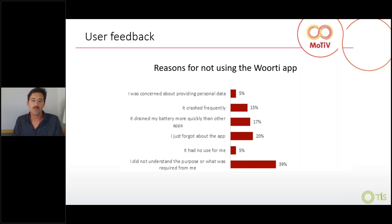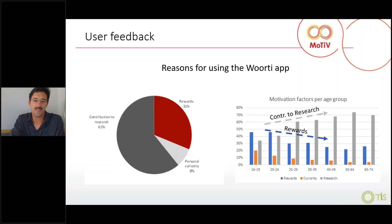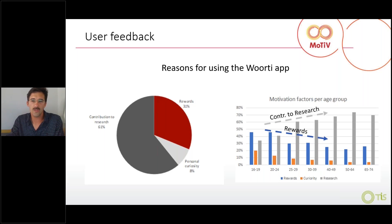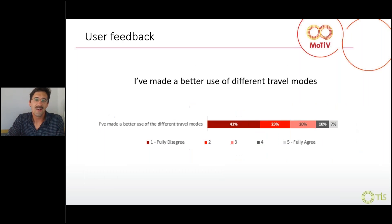We tried to improve the app over the data collection period of about six months. Among the traditional motivation factors — contributing to research on the altruistic side and material rewards on the egoistic side — we could see that most motivation was still contributing to research. This was more pronounced among older participants: the higher the age, the greater the willingness to contribute to research, and the less the motivation about material rewards.